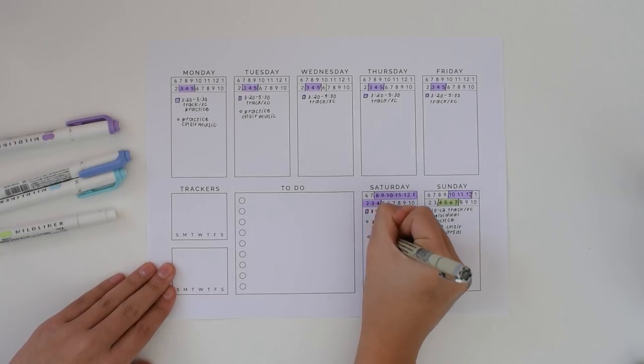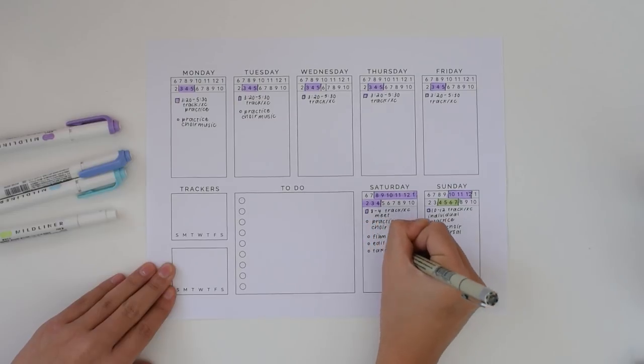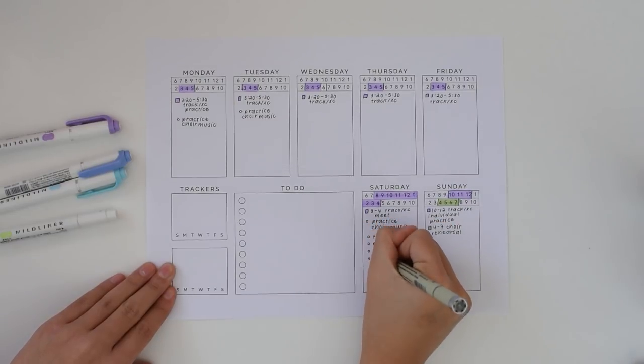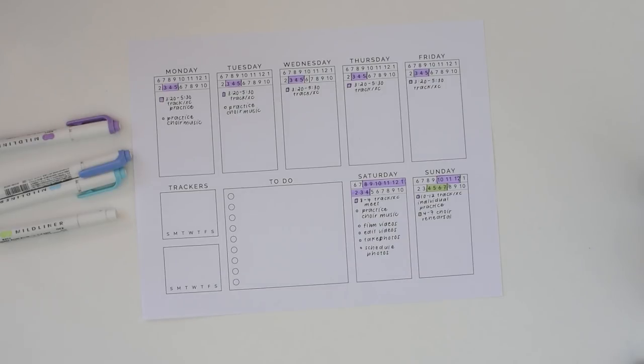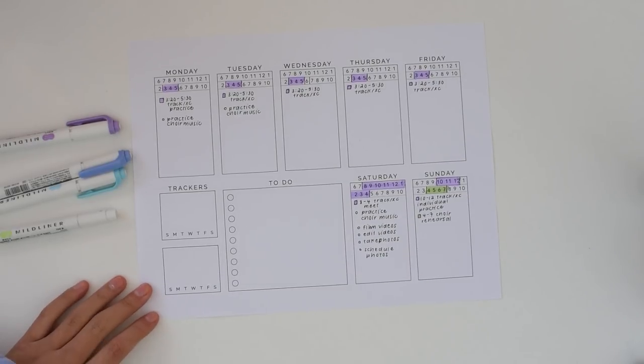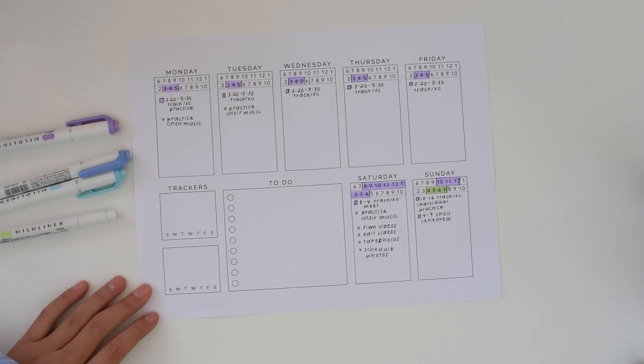On certain days when I have a lot to do, I'll estimate how long it takes to do each task that I have listed. Overestimating is always better than underestimating. Then each task is scheduled as if it were a timed event, not just a task. This way I have to finish it at that time and I cannot procrastinate.